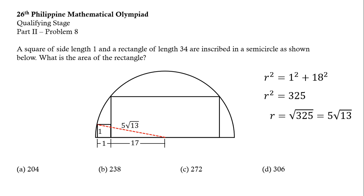Let us also connect the center of the semicircle to the top left corner of the rectangle. Now we have another radius. So the measure of this is also 5 square root of 13 units.